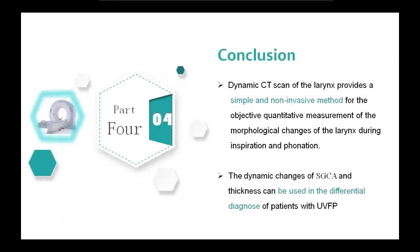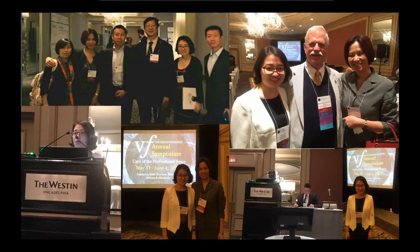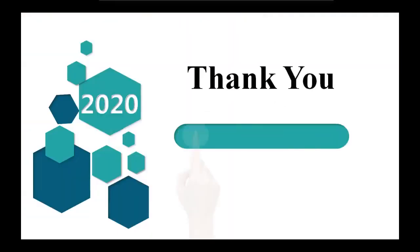In conclusion, the dynamic CT sequence of the larynx provides a simple and non-invasive method for the objective, qualitative assessment of morphological changes of the larynx during inspiration and phonation. The dynamic changes of subglottal convergence angle of the unilateral vocal cord paralysis can be used in differential diagnosis of the affected side. These are pictures from my first visit here. I hope to have another opportunity to come again. Thank you for your attention.